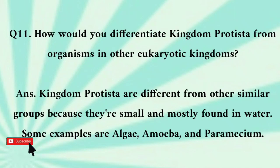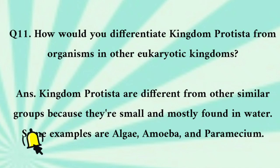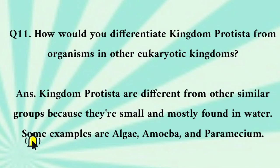How would you differentiate kingdom Prokaryotae from organisms in other eukaryotic kingdoms? Kingdom Prokaryotae are different from other groups because they are small and mostly found in water. Some examples of eukaryotes are algae, amoeba, and paramecium.